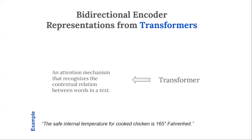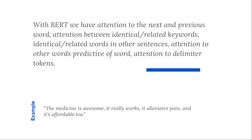For example: 'The internal temperature for cooked chicken is 165 degrees Fahrenheit.' The main thing here is the temperature — 165 degrees Fahrenheit. With BERT, we have attention to the next and previous words, and attention between identical and related words. We look at the words and see the identical or related words to justify meaning.